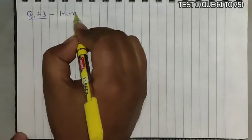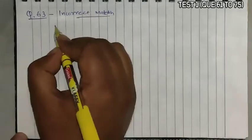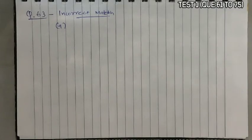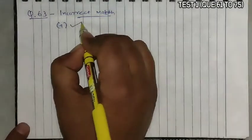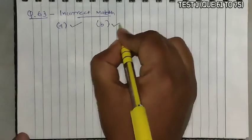Next is question 63: Which of the following is not correctly matched? We have to identify the incorrect match. Option A is 'Amoeba — Protozoans,' which is correct. Option B is 'Flagellated protozoans — Trypanosoma,' which is also a correct statement.